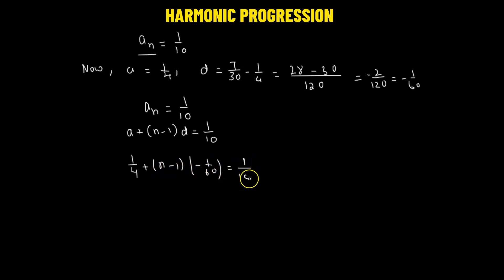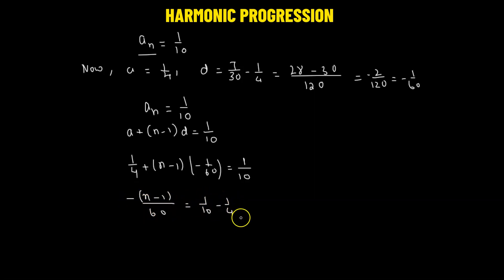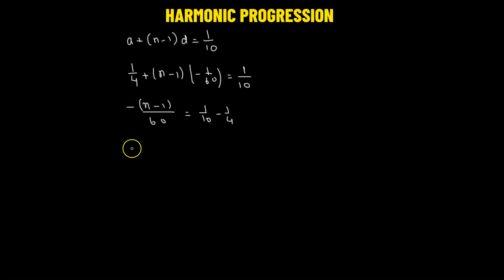So that's going to be 1 over 10 minus 1 over 4. We get negative n minus 1 over 60. So we have 40 into the denominator, then we have 4 minus 10, so that's going to be 6 over 40. So we have negative n minus 1 over 60 equals to negative 6 over 40.